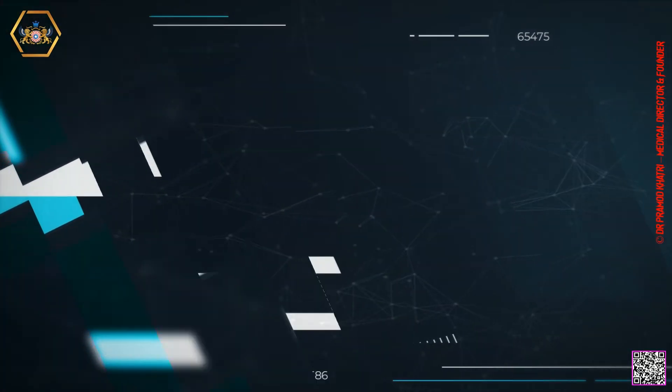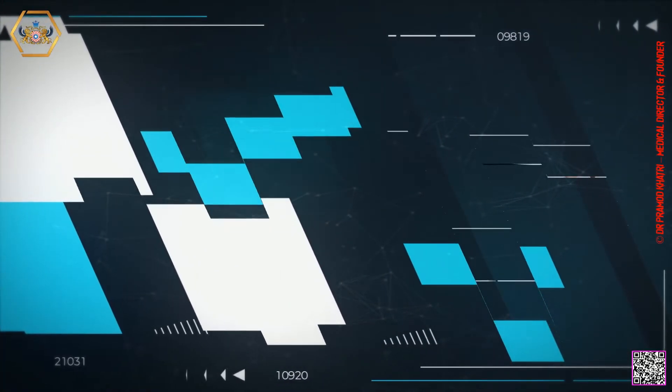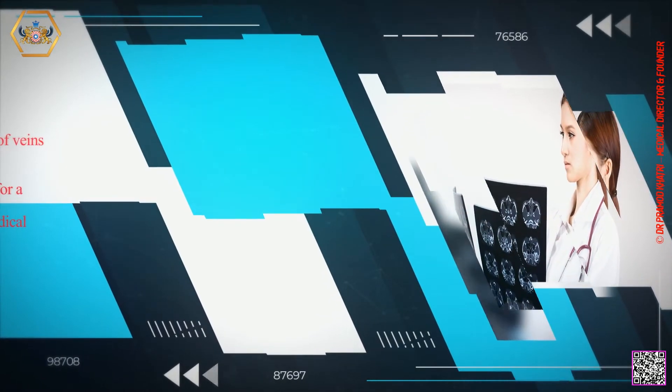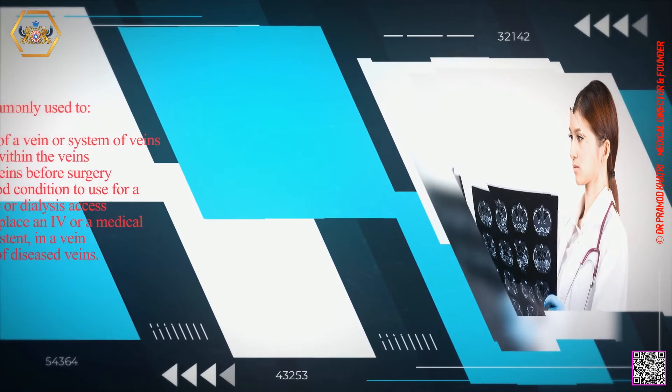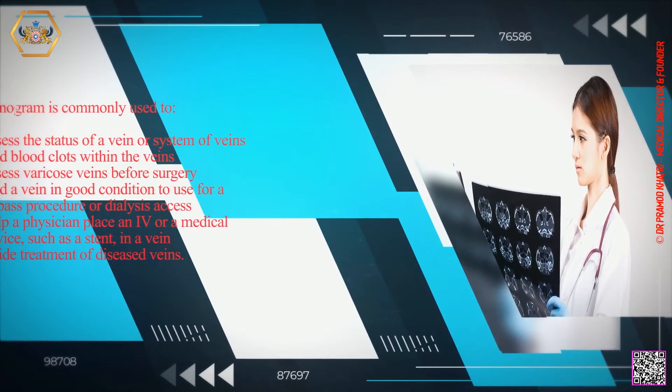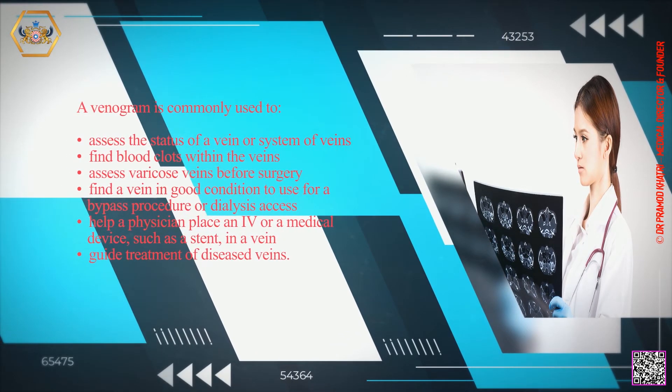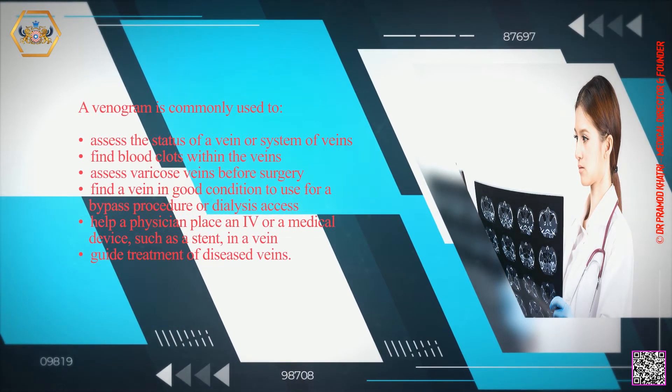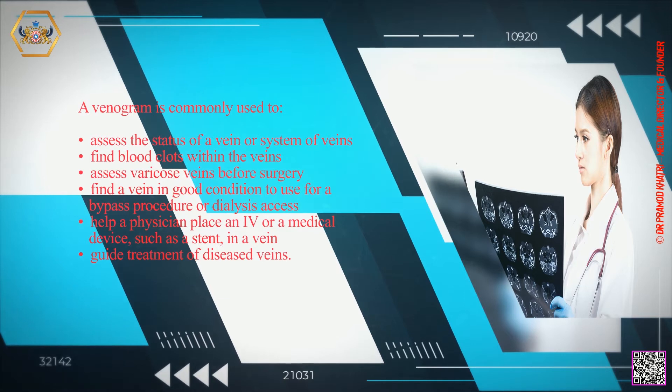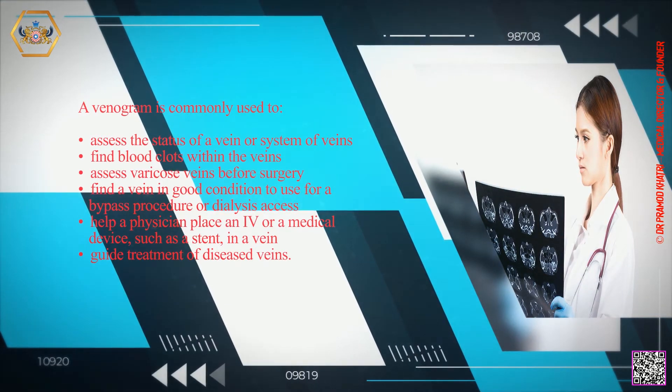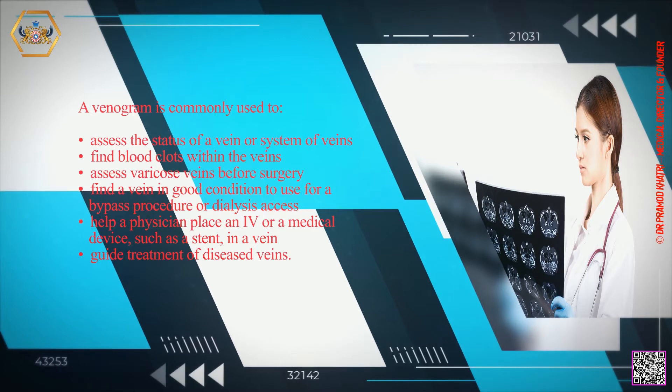A venogram is commonly used to assess the status of a vein or system of veins, find blood clots within the veins, assess varicose veins before surgery, find a vein in good condition to use for a bypass procedure or dialysis access, help a physician place a medical device such as a stent in a vein, and guide treatment of diseased veins.